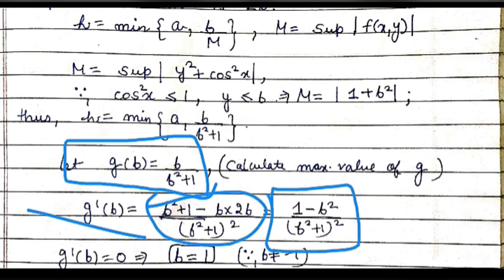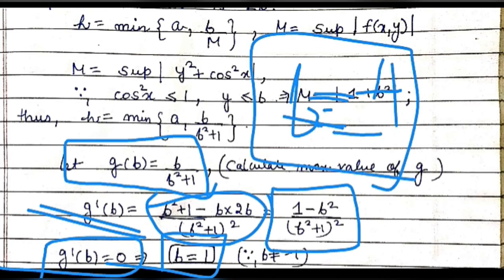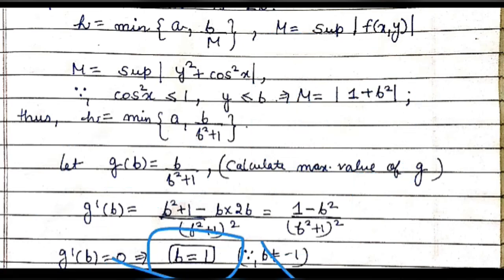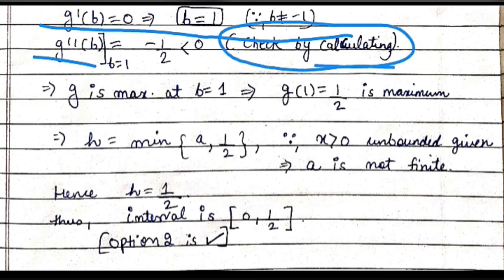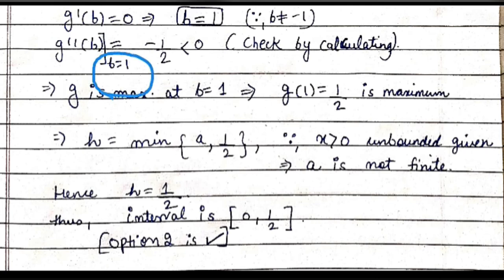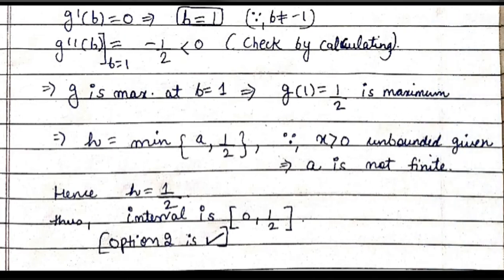Setting g'(b) = 0 gives 1 - b² = 0, so b = ±1. Since a and b must be positive, we take b = 1. Computing g''(b) gives a negative value, confirming b = 1 is a maximum. The maximum value is g(1) = 1/(1 + 1) = 1/2.